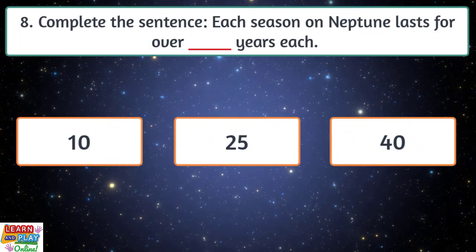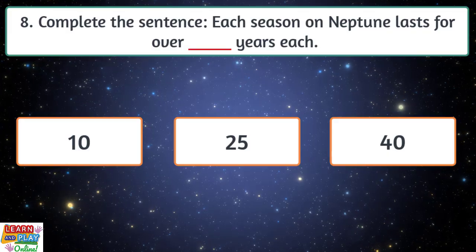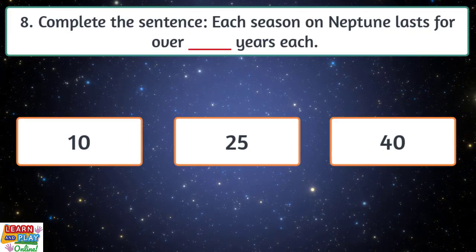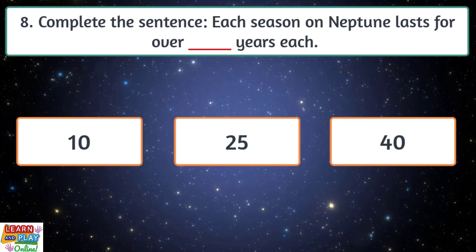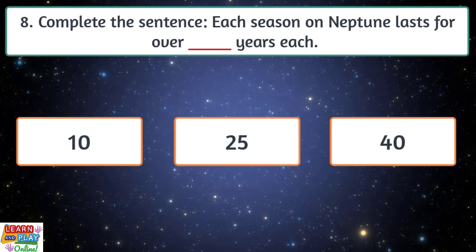Question eight. Complete the sentence. Each season on Neptune lasts for over years each. Is it 10, 25, or 40?